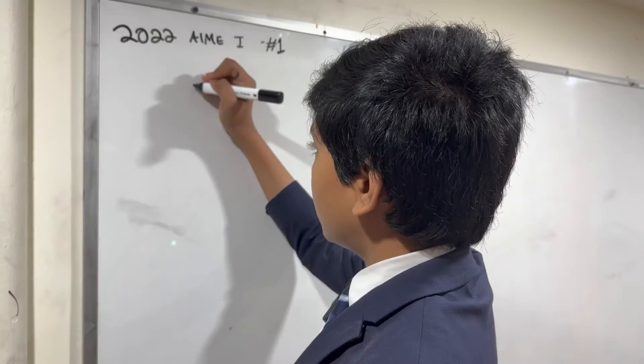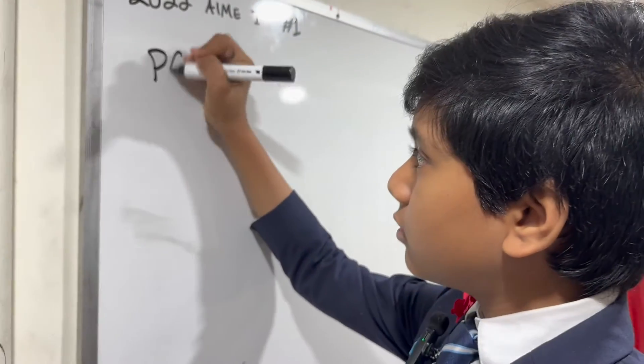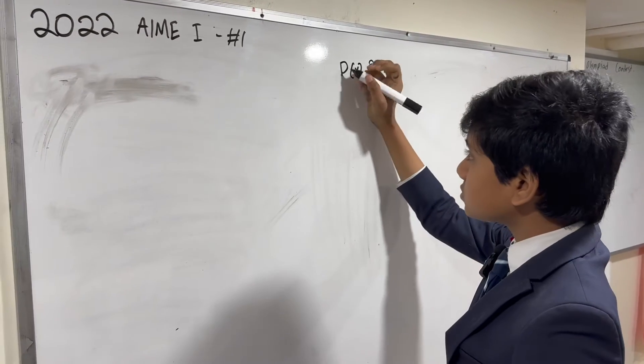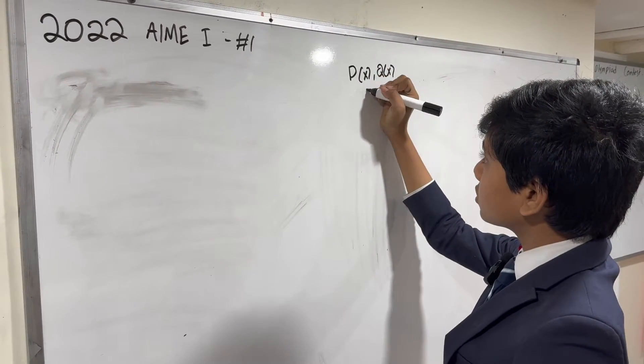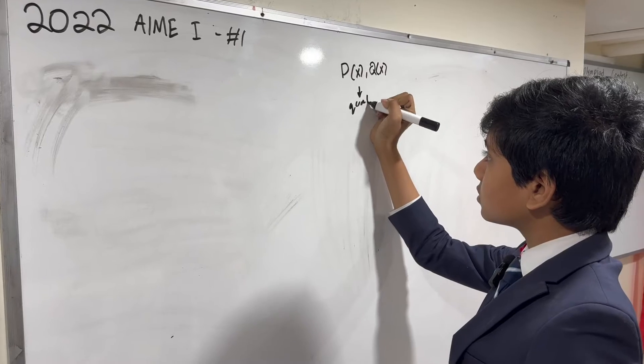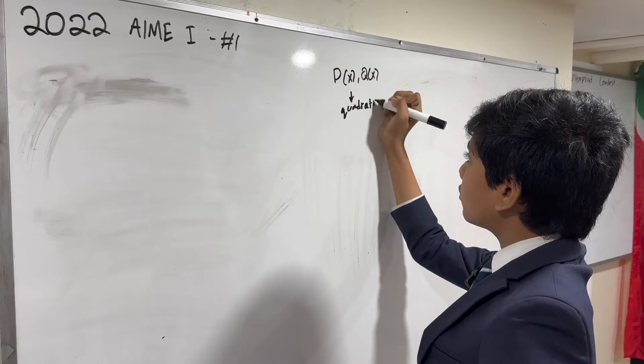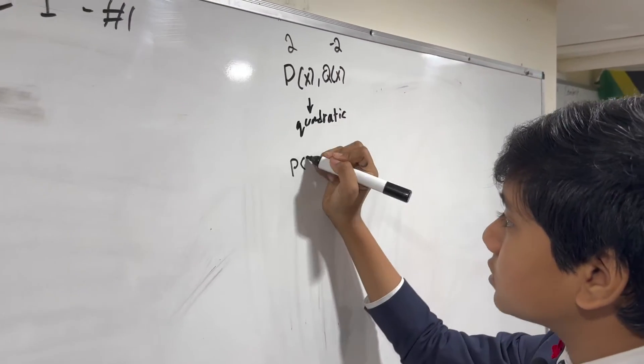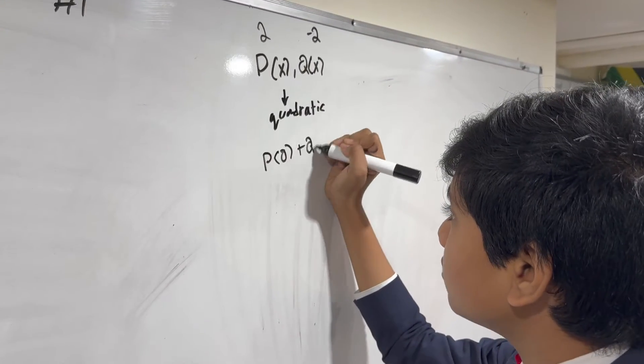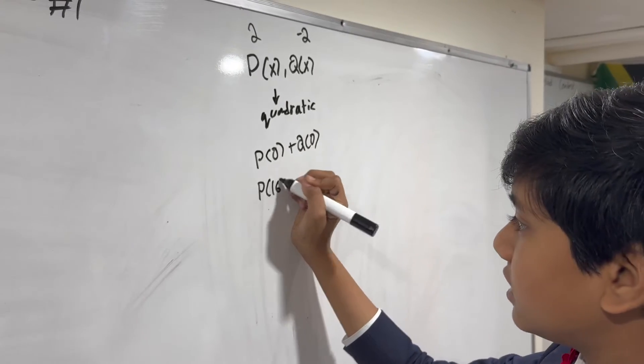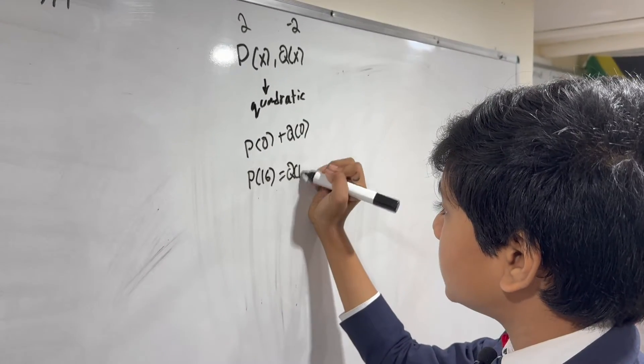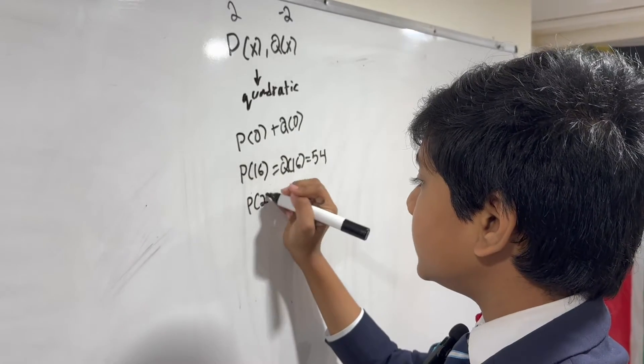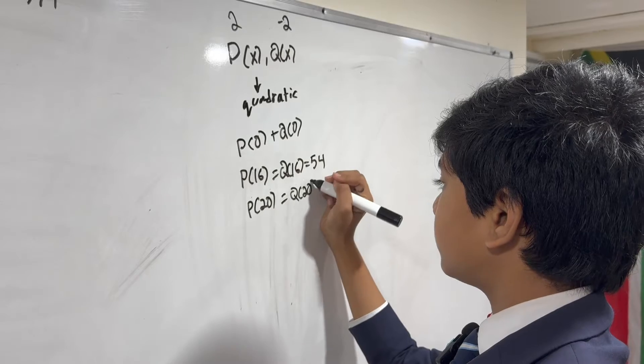This problem gives us P of x and Q of x, and tells us that they are both quadratic and that their leading coefficients are 2 and negative 2, respectively. Our job is to find P of 0 plus Q of 0, given that P of 16 equals Q of 16 equals 54, and P of 20 equals Q of 20 equals 53.